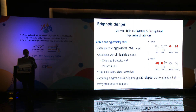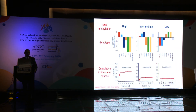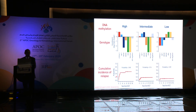Epigenetic changes and DNA hypermethylation in JMML now mark an aggressive variant, associated with clinical risk factors like older age, elevated hemoglobin F, and PTPN11 and NF1 mutations. Hypermethylation plays a role in clonal evolution to AML, and patients acquiring a higher methylated phenotype at relapse show worse outcomes even compared to diagnosis. Published data confirm that high DNA methylation correlates with poor-phenotype mutations like PTPN11 and NF1, while low methylation associates with rapid resolution cases like NRAS, CBL, and unknown mutations. Higher DNA methylation correlates with higher cumulative incidence of relapse.